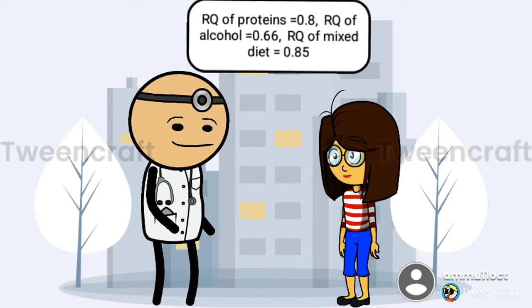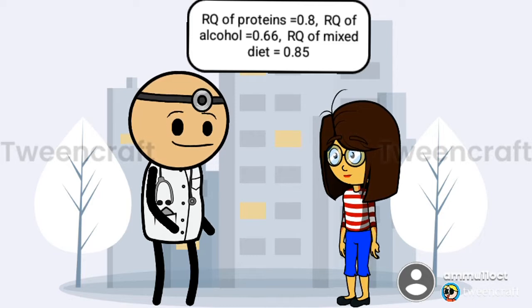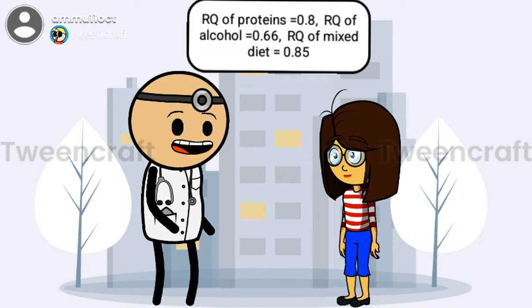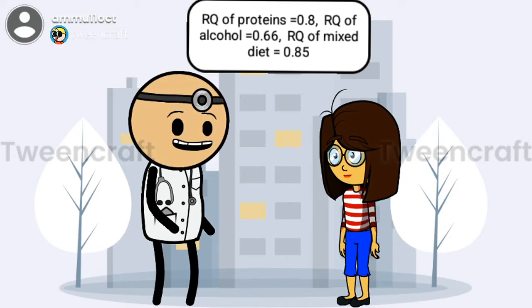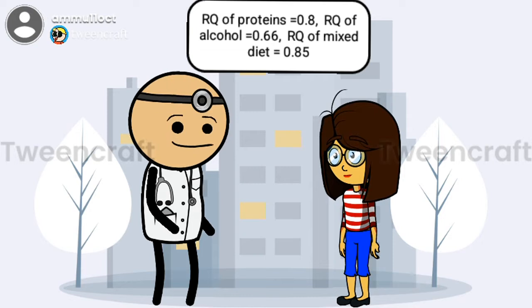What about the respiratory quotient of proteins? For proteins, the respiratory quotient is 0.8. For alcohol, it is 0.66. And for mixed diet, the respiratory quotient is 0.85. Try to remember all these values Nikki — these are very important questions.